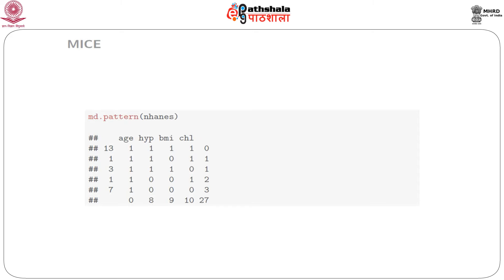To inspect the missing data pattern, the missing data numbers can be visualized using the function md.pattern() with the data frame as the argument. If we call md.pattern(enhance), we get the pattern table with age, hypertension, BMI, and cholesterol level. The output shows that 13 out of 25 rows are complete — those 13 rows have no missing data. There is one row for which only BMI is missing, and there are 7 rows for which only age is known.